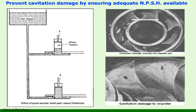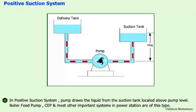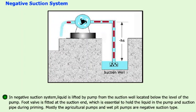In a positive suction system, the pump draws liquid from a suction tank located above the pump level — as in boiler feed pump, CEP, and CW systems — always giving a positive suction head at the pump inlet. When drawing water from a sump with a foot valve, it is a negative suction system where liquid is lifted from a suction well located below the pump level. This arrangement is mostly used in agricultural pumps and wet pit feed pumps.